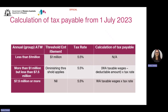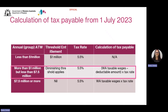Now let's take a look at the thresholds and rates for the 2023-2024 financial year. The annual threshold amount in Western Australia from 1 July 2020 is $1 million, and the monthly threshold amount is one twelfth of this, which is $83,333. From 1 July 2023, the payroll tax rate is 5.5% of the taxable wages paid by all employers or groups of employers whose taxable wages are above the annual threshold of $1 million. If your taxable wages are below the annual threshold of $1 million, then you are not liable for payroll tax.